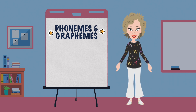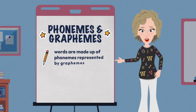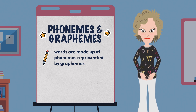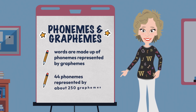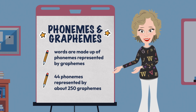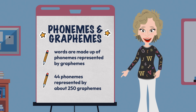Phonemes are the smallest unit of sound and graphemes are letters, but the important idea is that words are made up of phonemes represented by graphemes. This correspondence sounds simple, but the fact is that there are only 44 phonemes in our language, and those 44 phonemes can be represented by about 250 different graphemes and grapheme combinations.